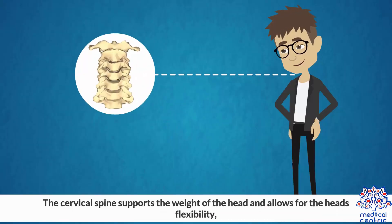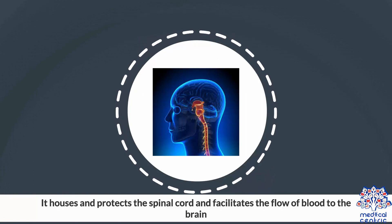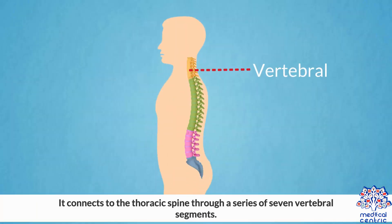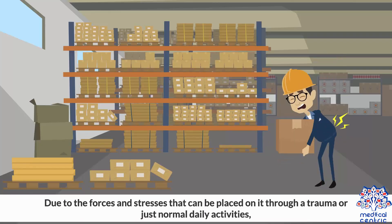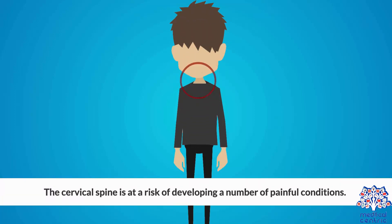The cervical spine supports the weight of the head and allows for the head's flexibility. It houses and protects the spinal cord and facilitates the flow of blood to the brain. It connects to the thoracic spine through a series of seven vertebral segments. Due to the forces and stresses that can be placed on it through trauma or just normal daily activities, the cervical spine is at risk of developing a number of painful conditions.